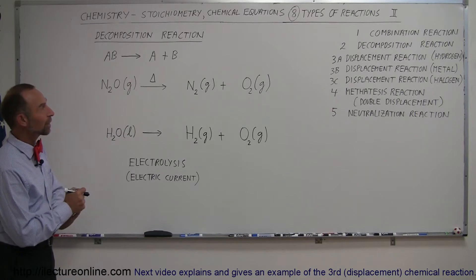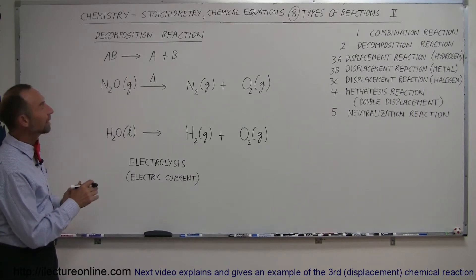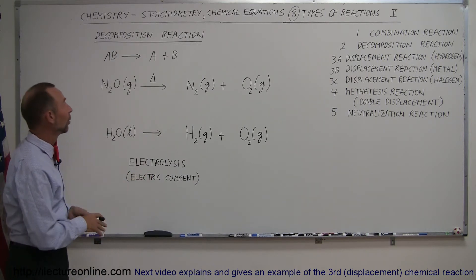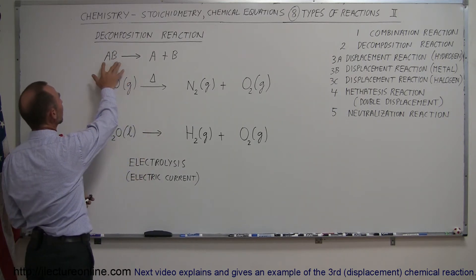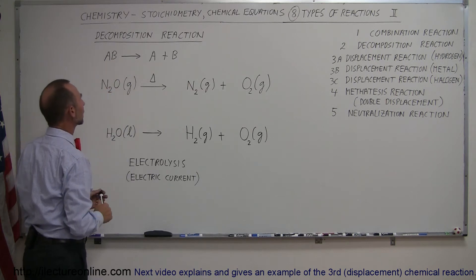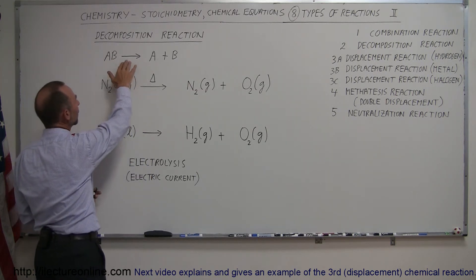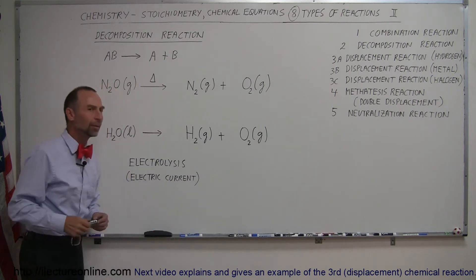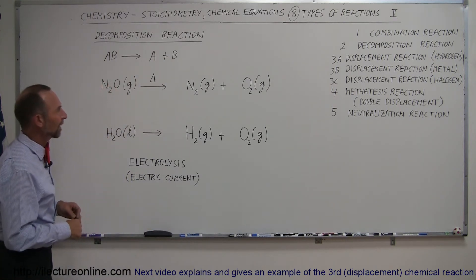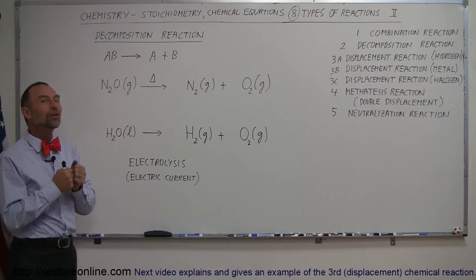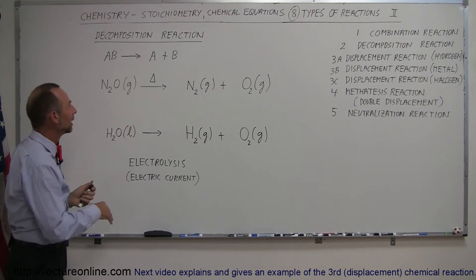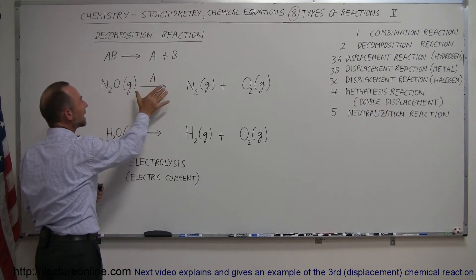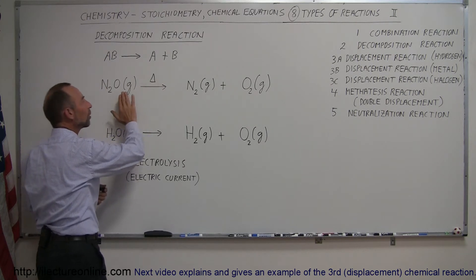Our next type of chemical reaction is what we call a decomposition reaction, which is of course the opposite of a combination reaction. What we have here is a compound — two elements joined together chemically — and a reaction occurs yielding the two separate elements. Here we have a little triangle over the reaction, which means we have to add heat, otherwise this would not normally occur.